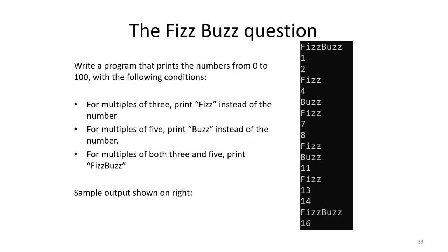The FizzBuzz interview question asks the following: Write a program that prints the numbers from 0 to 100 to the screen with the following conditions. If the number is a multiple of 3, you print Fizz instead of the number.